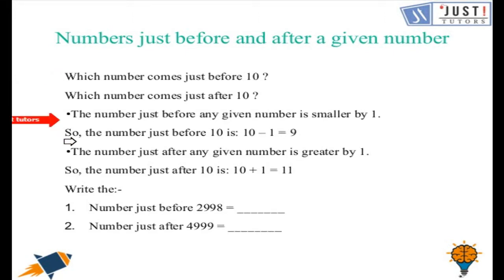So when we have to tell a number which comes just before, we subtract 1 from it. And when we have to give a number which comes just after, we have to add 1 to it. So could you please try to solve this question here?